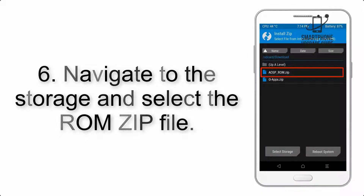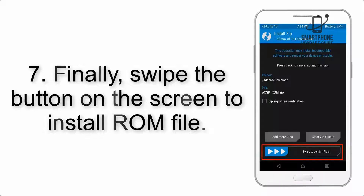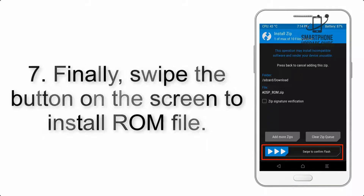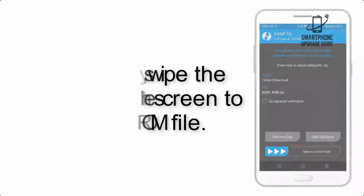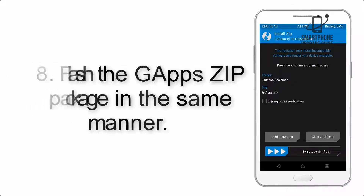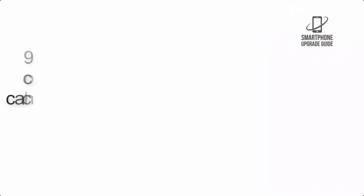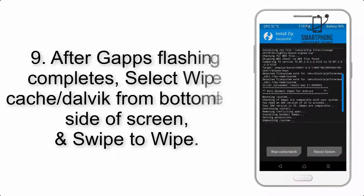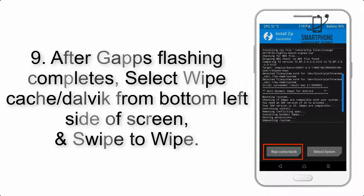Step 5: Go back to the recovery main screen and tap on the Install button. Step 6: Navigate to the storage and select the ROM zip file. Step 7: Finally, swipe the button on the screen to install the ROM file.